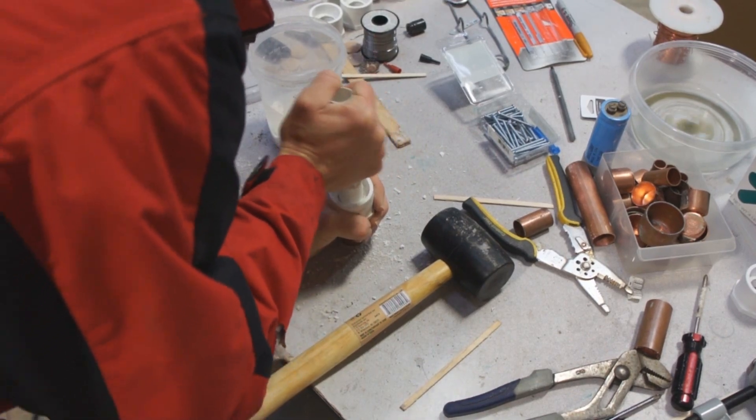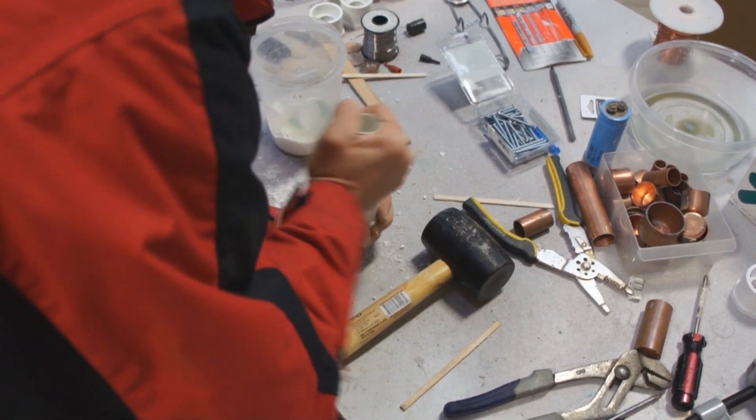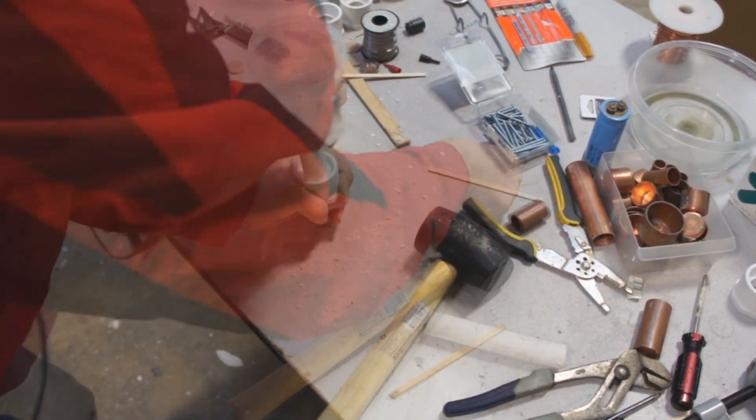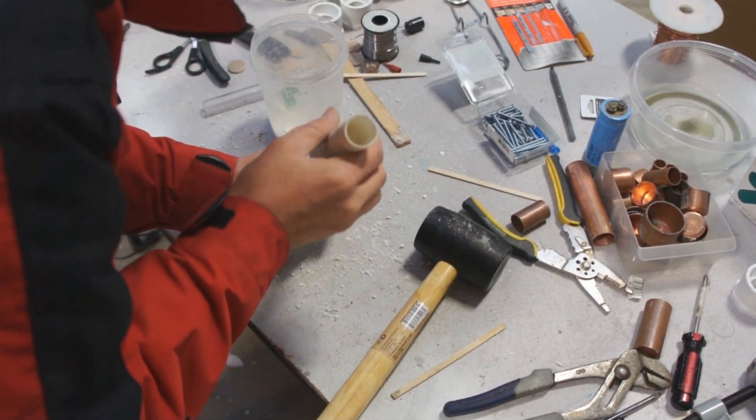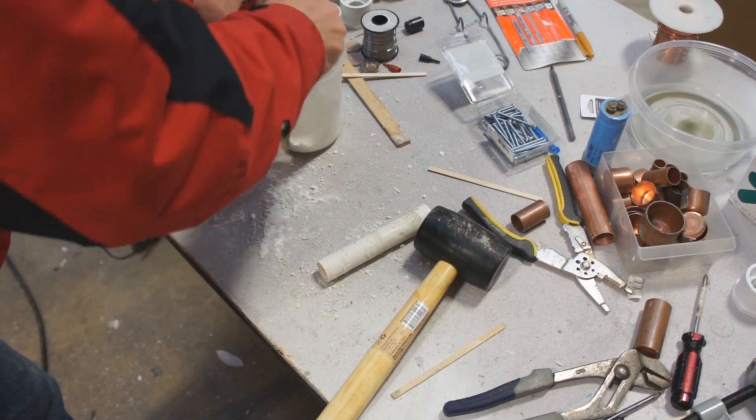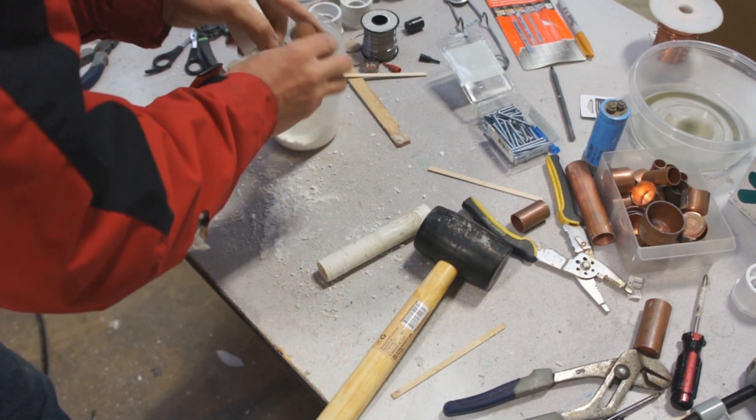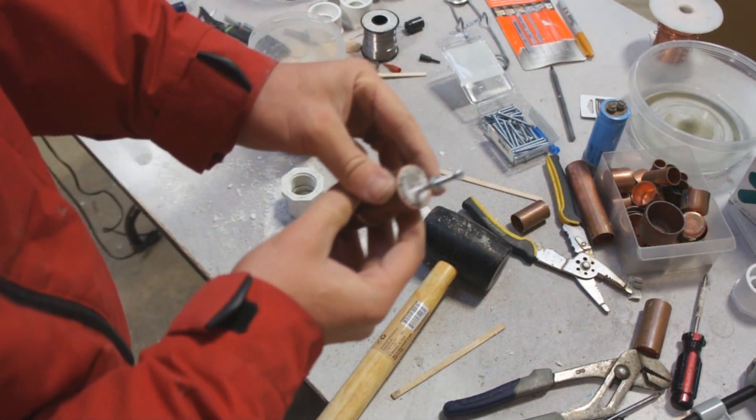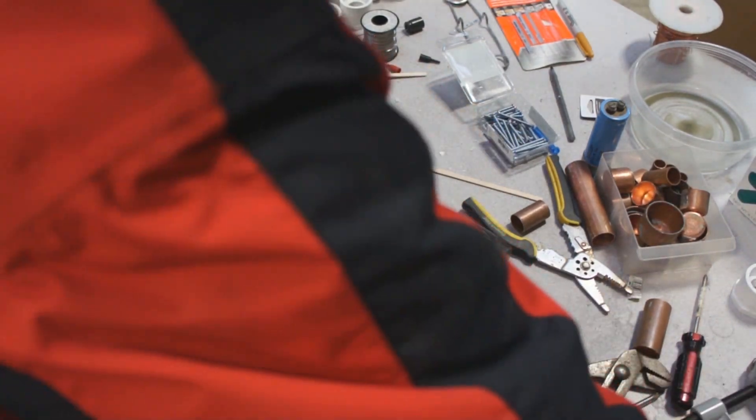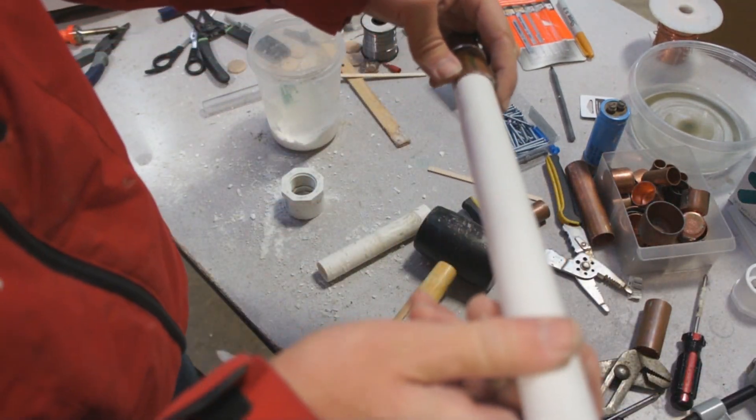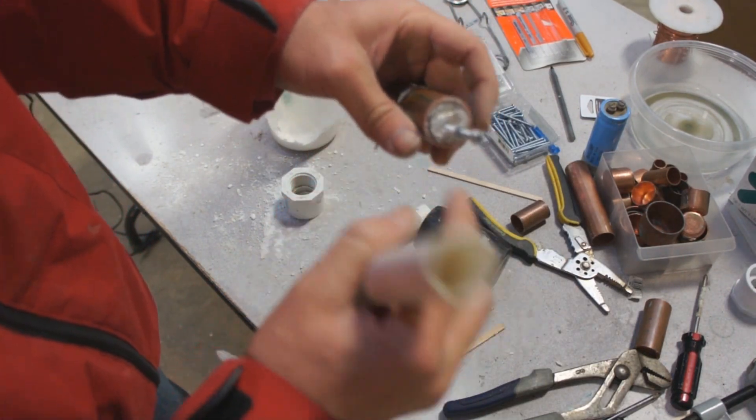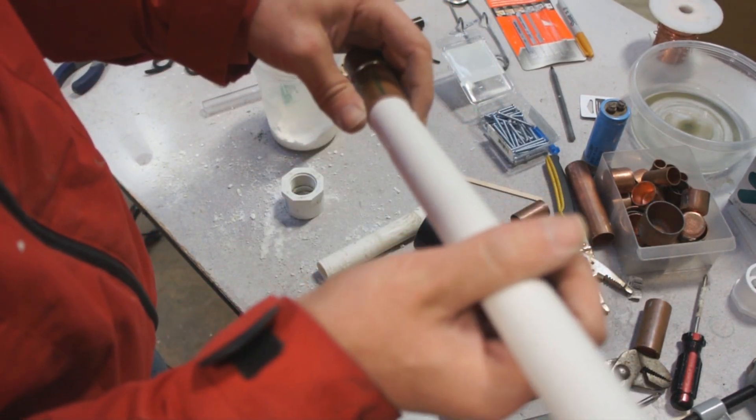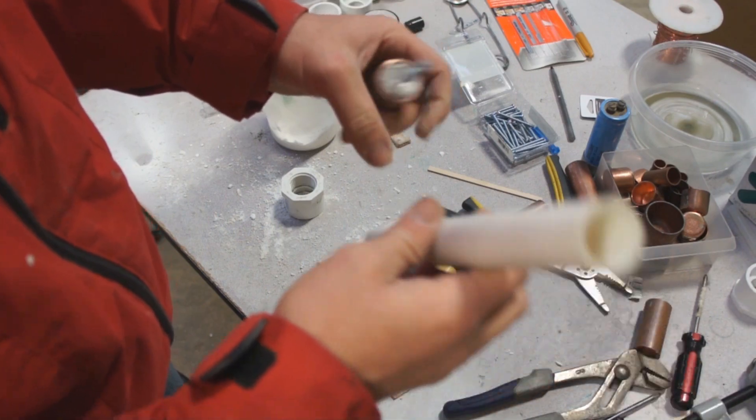This is pretty much full of material. At this point I can take this off and you can see there's a little bit of an indentation. What we want to do is take this piece and pound a ring down into this material and leave a stopper ring on the top to hold the material in.